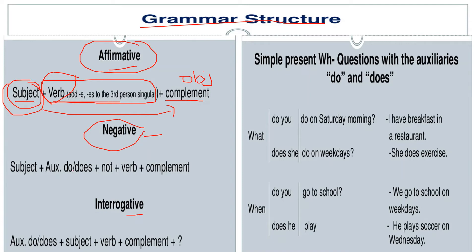In the negative sentence you will find first a subject, then an auxiliary verb like 'do' or 'does', then a negation — that means 'not' — then a verb, then a complement.